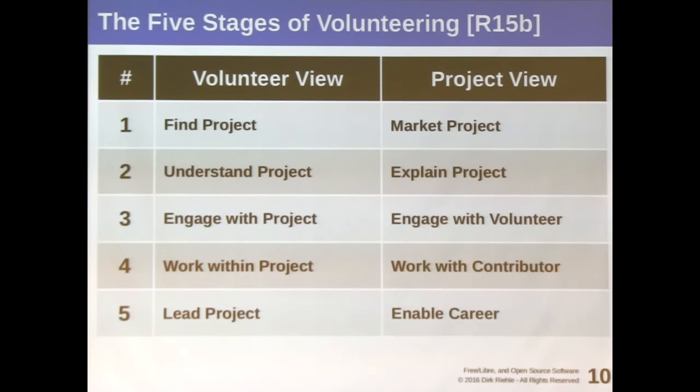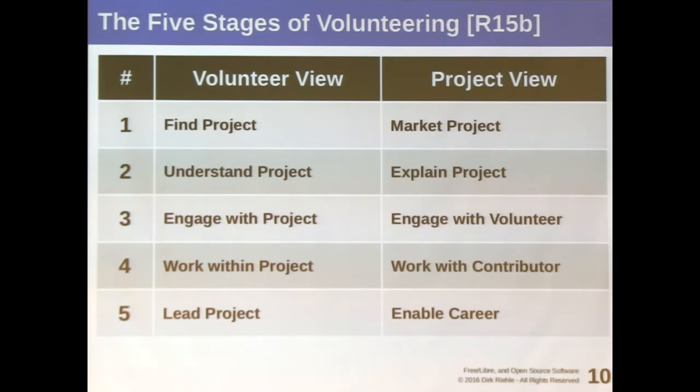I want to talk about the unpaid work, where you are a volunteer coming towards a project and going through stages of engagement. These are the five stages of open source volunteering. It's quite important — it's a dual view. There's a volunteer view: someone who has a need, like solving a problem via an open source component. And there's the project, which is always looking for more people to help. So these two interests need to meet each other — they need to match. Otherwise, there's no volunteering, no help for the project, and no problem solving for the person looking to solve that problem.